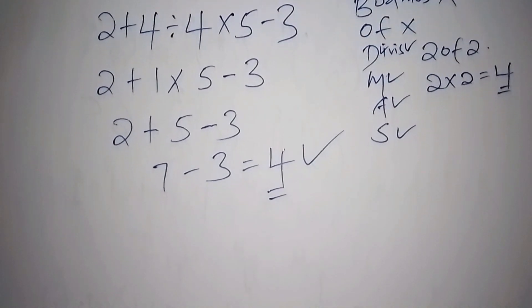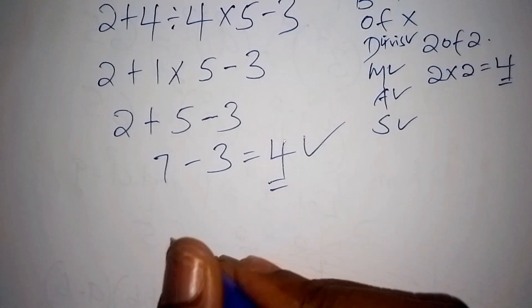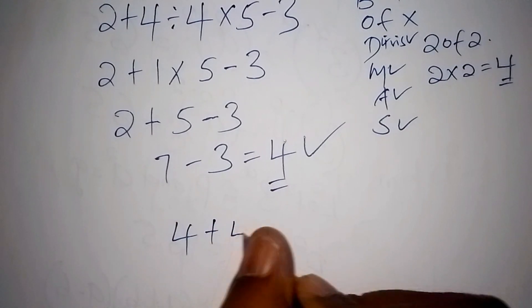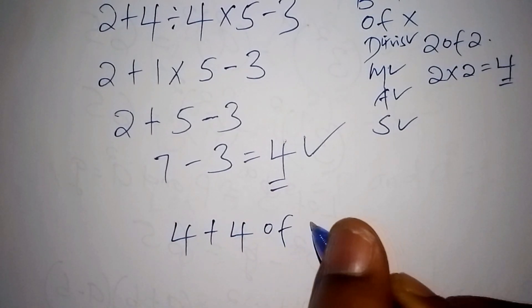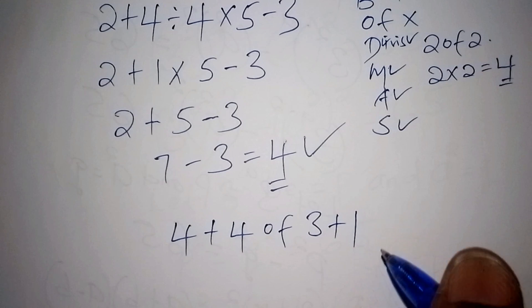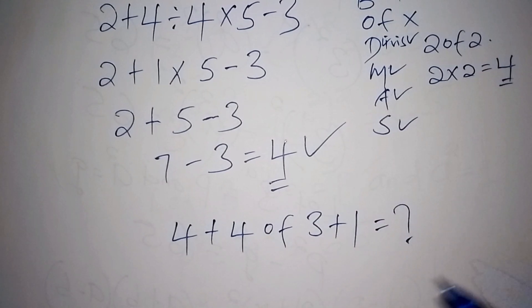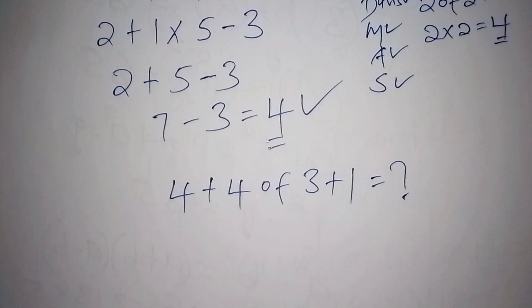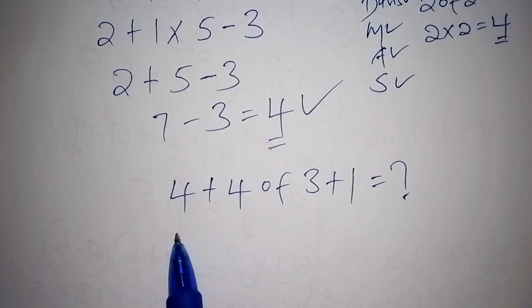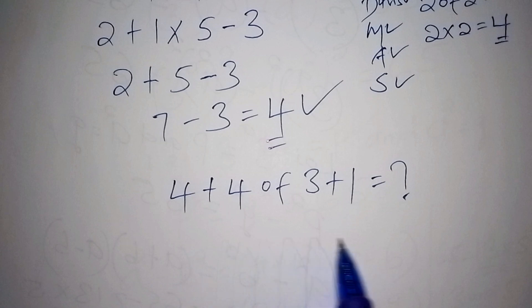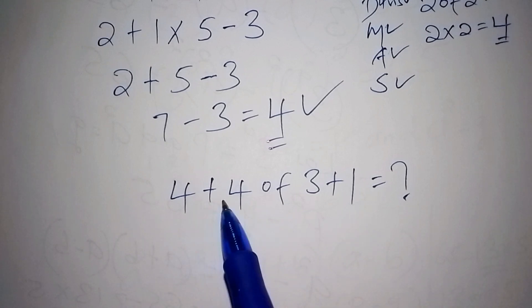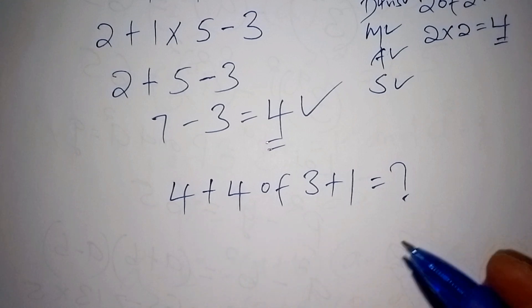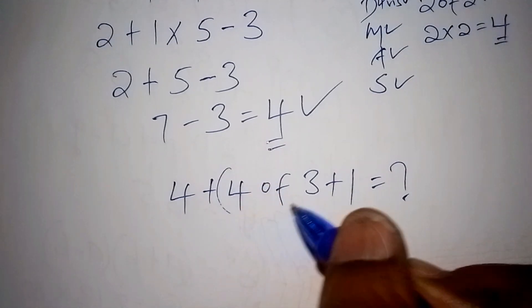So when we try an example with the value of 'of', when you have 4 plus 4 of 3 plus 1, how can we work it out being that now we have the 'of'? So as usual, by following our maths problem, since this 'of' is multiplication, so we have 4 plus 4. Don't choose to work 4 plus 4 first. Always choose to work this 'of'.